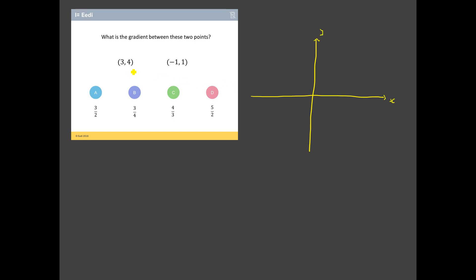So I've got my y-axis there and I've got my x-axis there. So let's mark these coordinates on. So I've got 3, 4. So that's 3 across the x and 4 up the y. Now, notice I'm not spending any time doing this accurately or anything like that. I just want this roughly marked on so I get a bit of a sense of this. Next up, I'm going to go for minus 1, 1. So I'm going to go negative 1 across the x and 1 up the y.